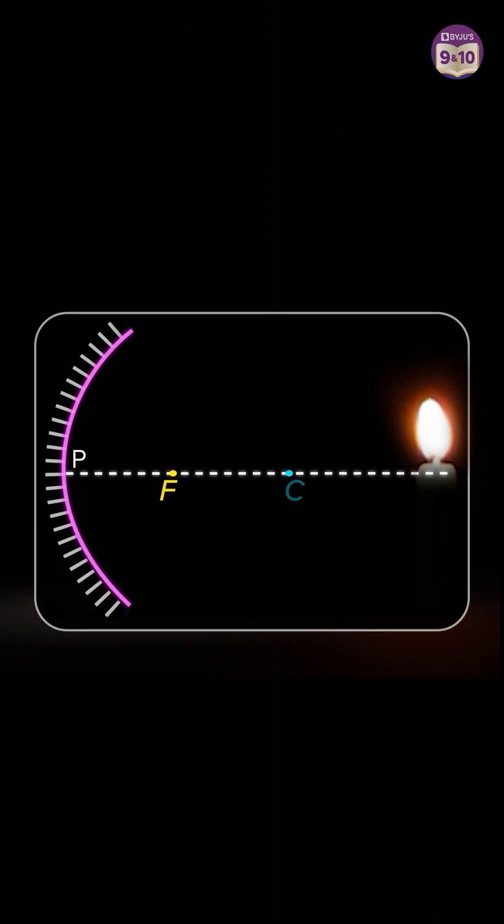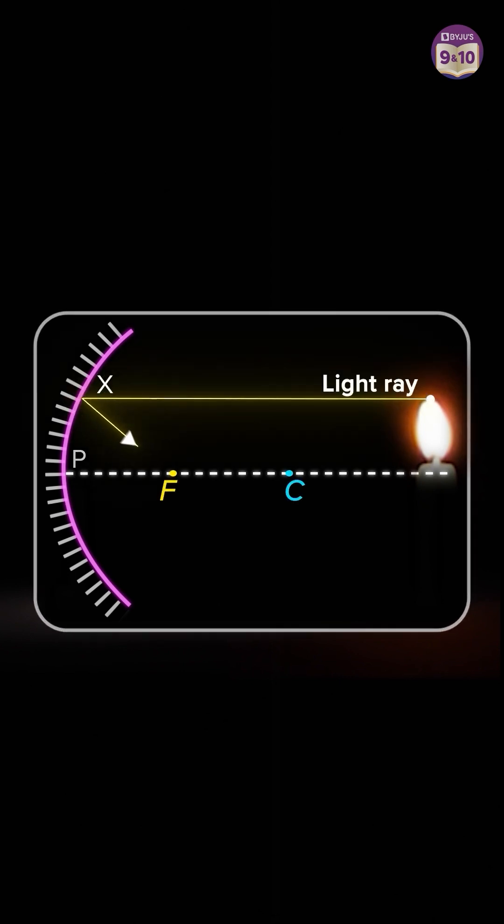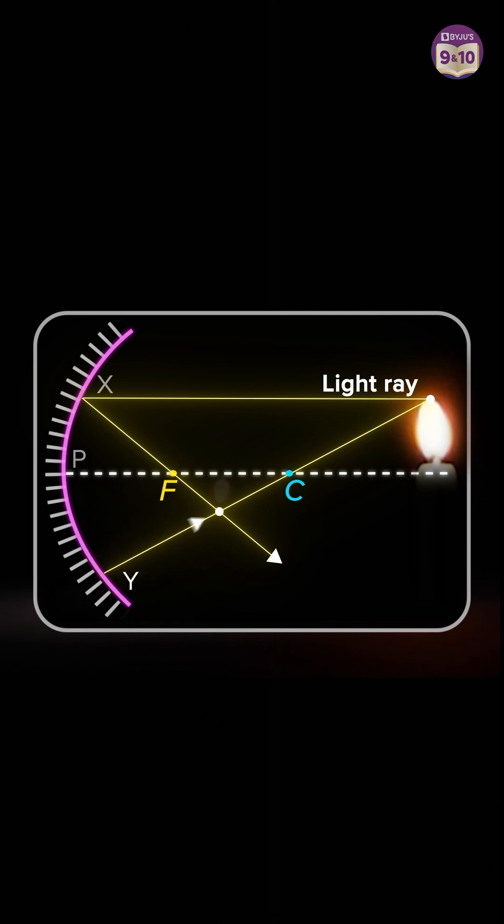We'll take one ray as parallel to principal axis. Second one passing through center of curvature which traces its path back.